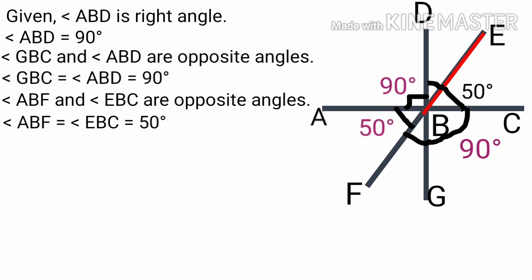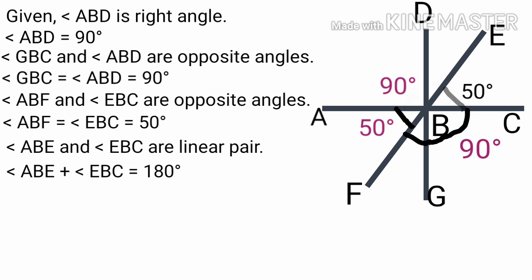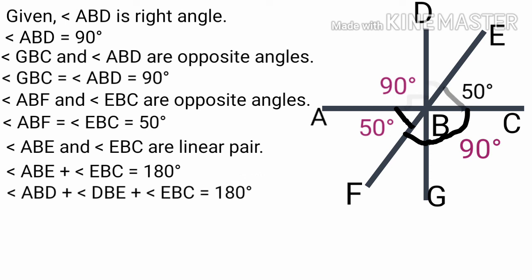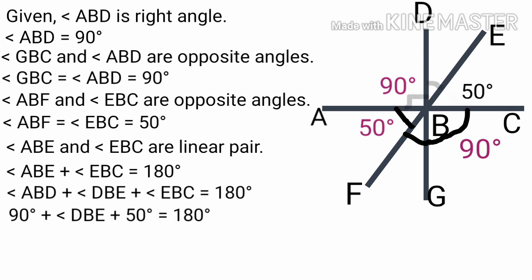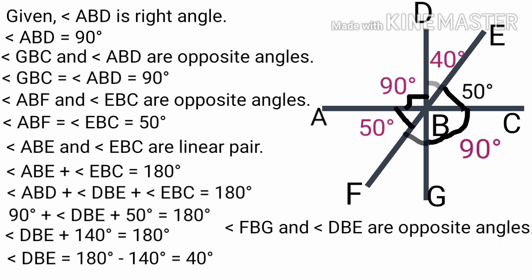EBE is a line drawn to line AC. Therefore angle ABE and angle EBC are a linear pair. Angle ABE plus angle EBC is equal to 180 degrees. Angle ABE is equal to angle ABD plus angle DBE. Therefore 90 plus 50 plus angle DBE is equal to 180 degrees. Angle DBE is equal to 180 minus 140 degrees, that is equal to 40 degrees. Angle FBG and angle DBE are opposite angles, therefore angle FBG is equal to angle DBE, that is equal to 40 degrees.